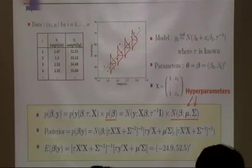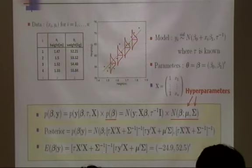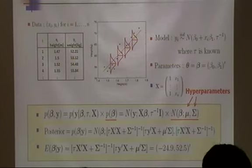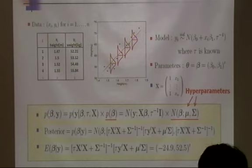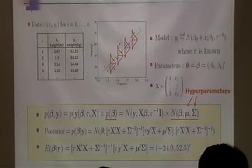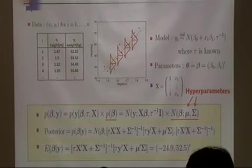The posterior mean of beta given data is a function of data plus hyperparameters, and it turns out the posterior is also normal with a different mean and variance. The result — a posterior mean of 0.52 — means that if a woman becomes 10 centimeters taller, she will gain about 5 more kilograms on average. This is the Bayesian statistical inference: start with a joint distribution, obtain the posterior, and make conclusions via the posterior mean.